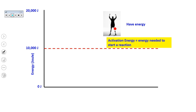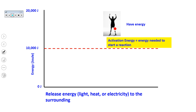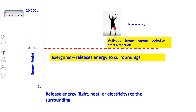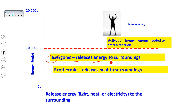Reactions that have 10,000 joules and excess — they have an excess of the activation energy — release energy in the form of light, heat, or electricity to the surroundings. We call those exergonic reactions. 'Gonic' is a general term for any type of energy. If that energy is specifically heat, we call it exothermic. One way to remember that exothermic means releasing heat is that the first two letters of 'exo' are the first two letters of the word 'exit' — so heat exits the reaction into the surroundings.